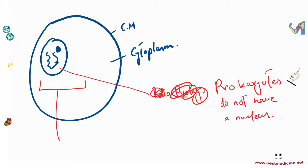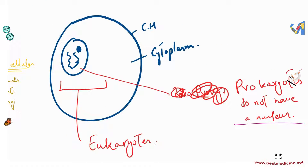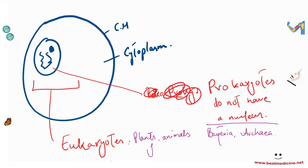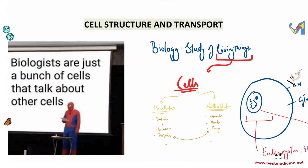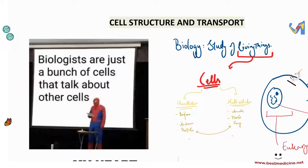Eukaryotes do have a nucleus. Can you give me some examples of prokaryotes and eukaryotes? Prokaryotes would be something like bacteria and archaea. For eukaryotes we have plants and animals. The only unicellular organism that is a eukaryote is protists. Protists include water-living organisms such as amoeba — you probably heard of amoeba in year eight. So here: cell structure and transport — that's how it begins.